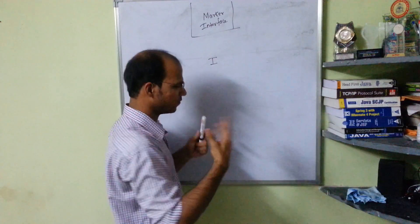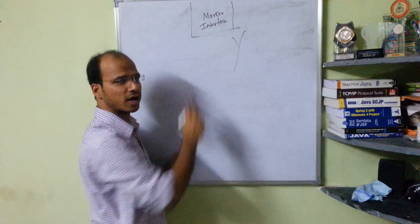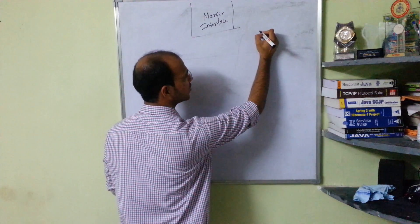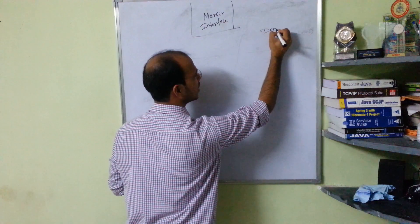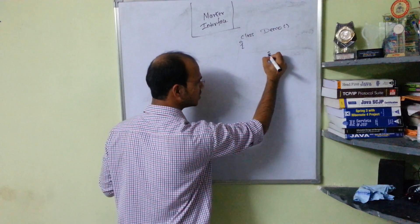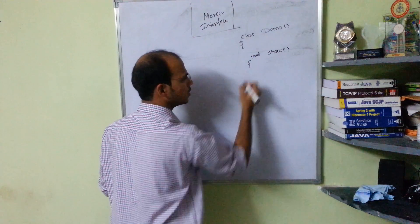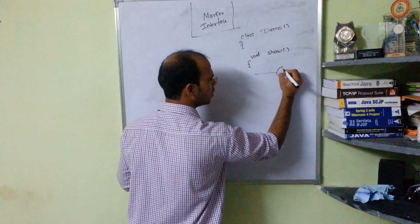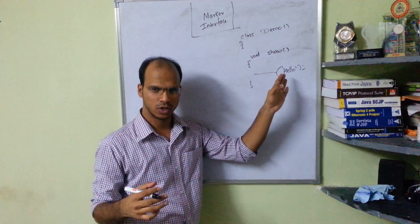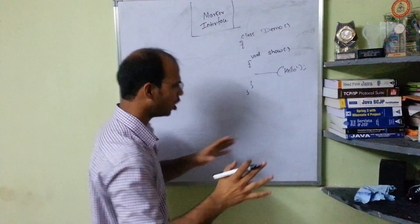The main question is: why do we need a marker interface? So let's suppose you have a class called demo. In this class I have a method called show — it's void show — and I want to print 'hello', so I have System.out.println('hello'). So I have a class demo with a method show.